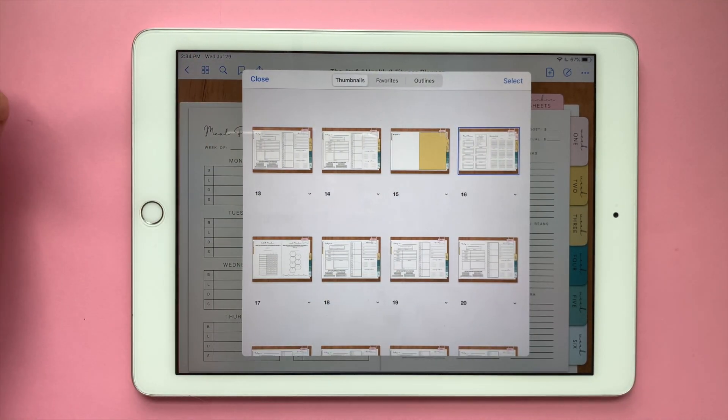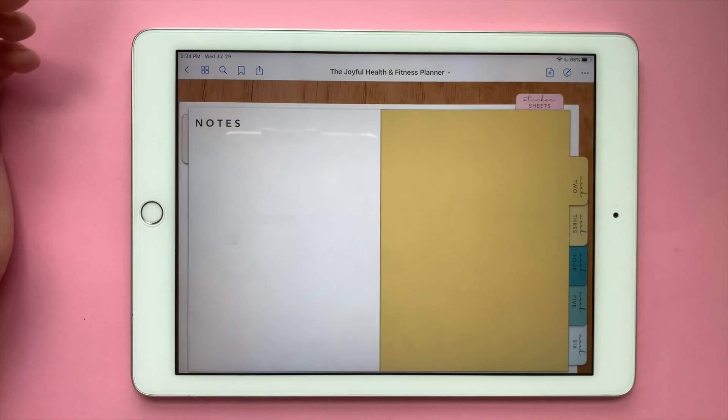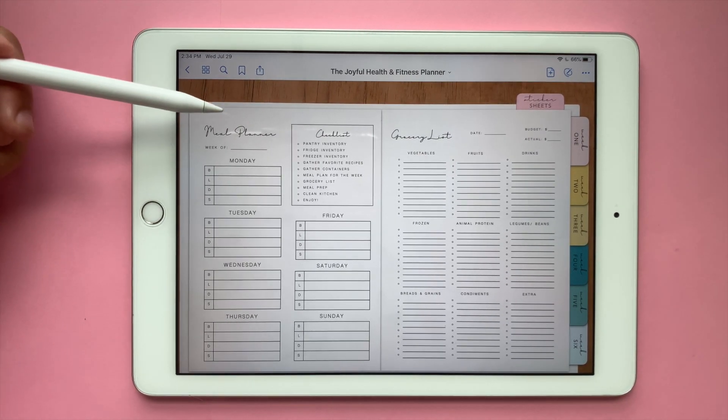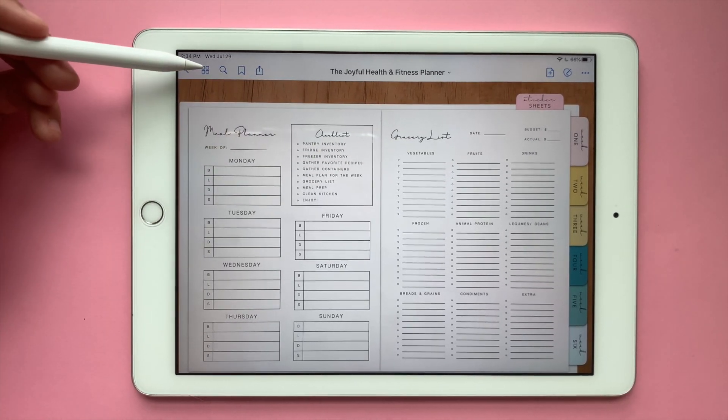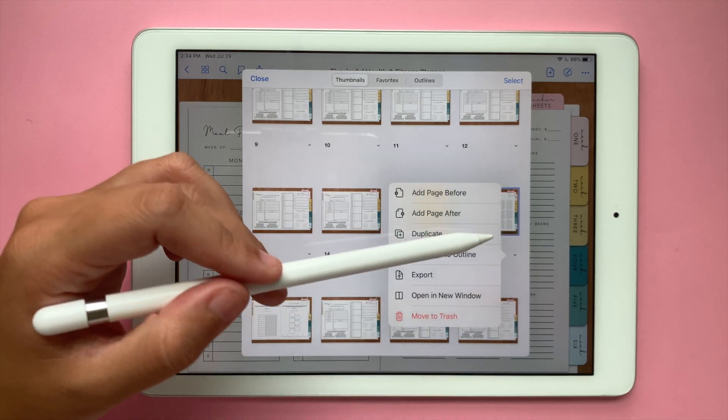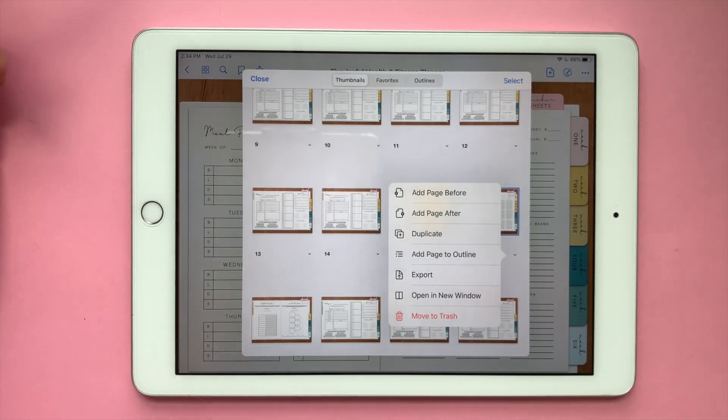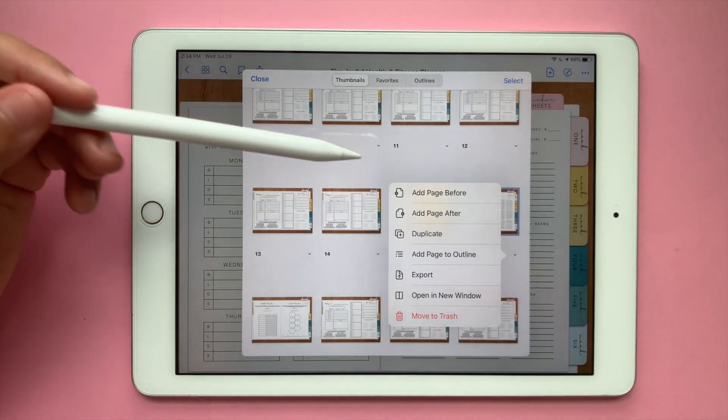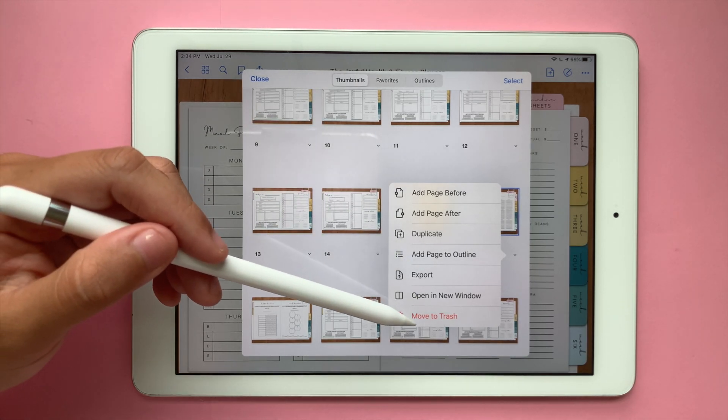And let's say this is week two. So I'm going to put it right in front of week two. So we have week two and then we swipe and then you have meal planner and grocery list. So you could do that. It's very customizable. That's one of the benefits of having a digital planner.